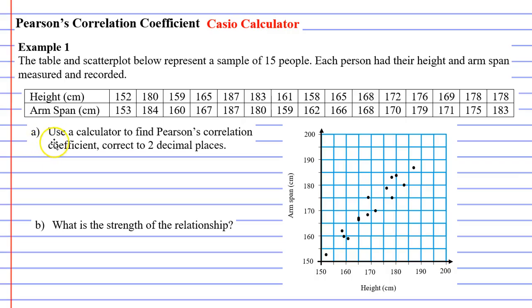Question A says use a calculator to find Pearson's correlation coefficient correct to two decimal places.